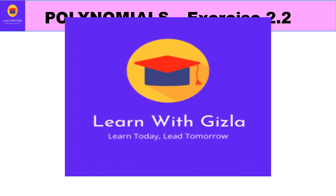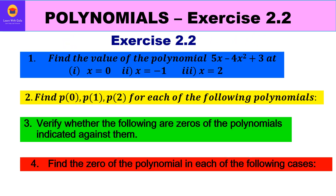Welcome to YouTube channel Learn with Kizla. In this video on polynomials, we are going to take up Exercise 2.2 of NCERT. There are four types of questions: first, find the value of a polynomial at x=0, x=-1, x=2; second, find p(0), p(1), p(2); third, verify whether given numbers are zeros of the polynomials; and fourth, find the zeros of given polynomials.